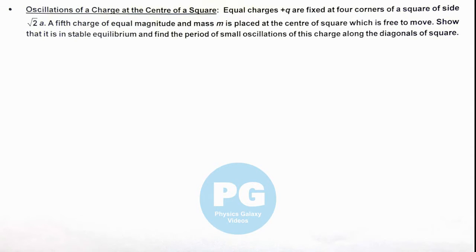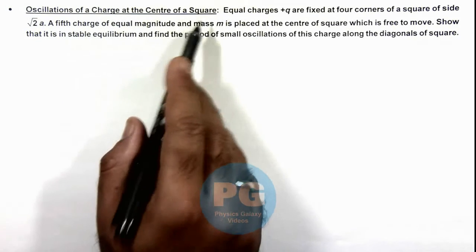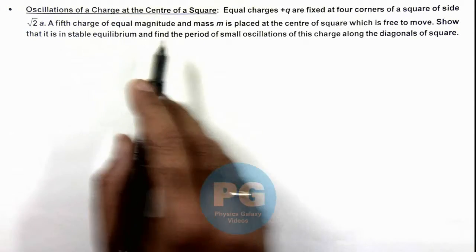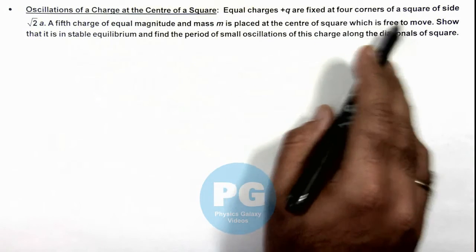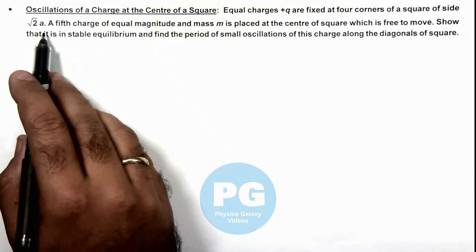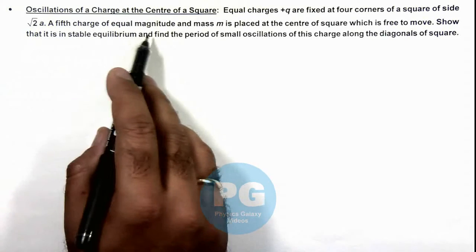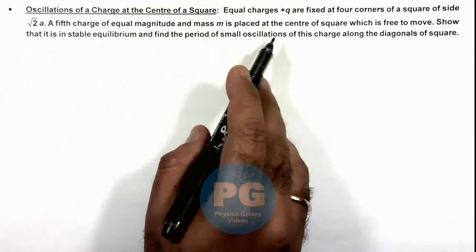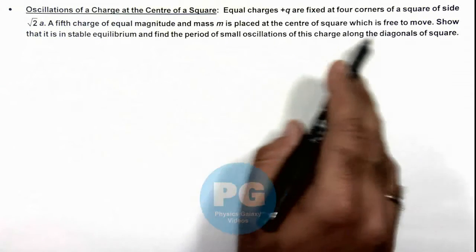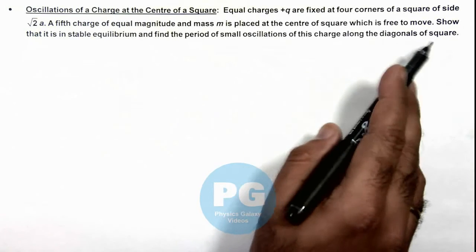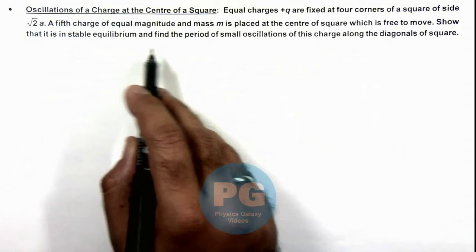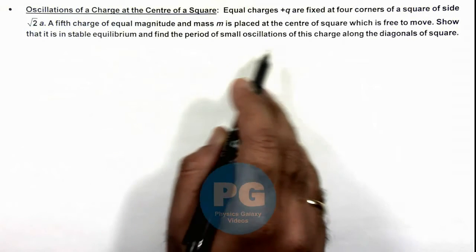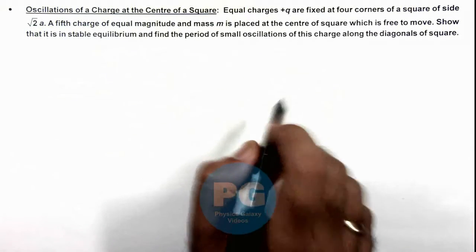In this illustration, we'll be studying about oscillations of a charge at the center of a square. We are given that equal charges plus q are fixed at 4 corners of a square of side root 2 a. A fifth charge of equal magnitude and mass m is placed at the center of the square which is free to move. We are required to show that it is in stable equilibrium and find the period of small oscillations of the charge along the diagonals of the square.